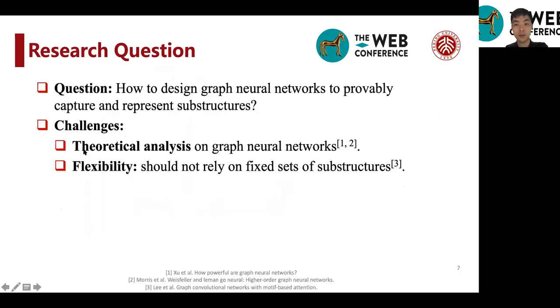So here comes the research question. How can we design graph neural networks to provably capture and represent substructures and improve the existing graph neural networks in both theoretical and practical aspects? And there are two key challenges in these efforts.